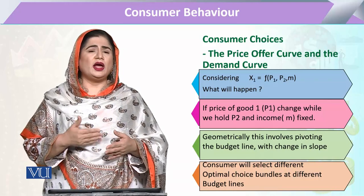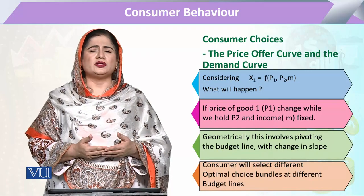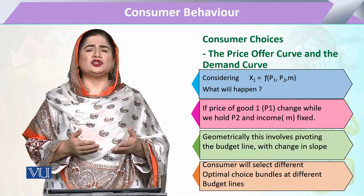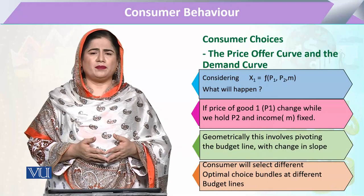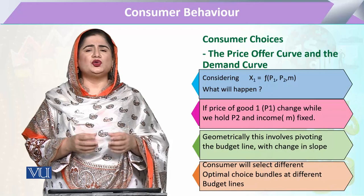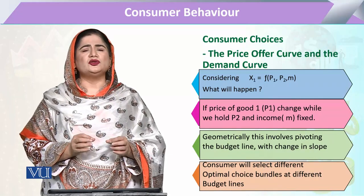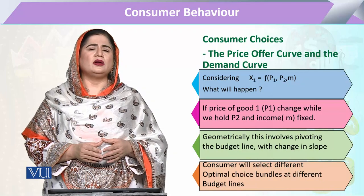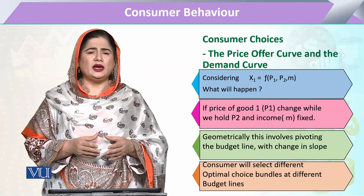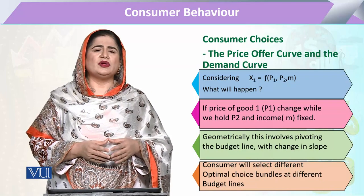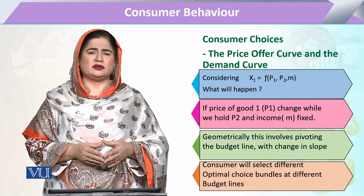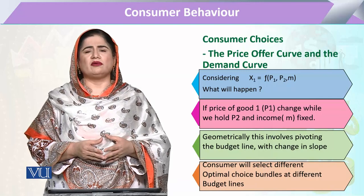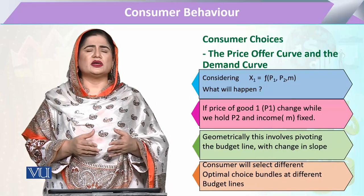Whenever there is a change in the price of a commodity, there will be a change in the shape of the consumer demand. When we join all the optimal choice bundles or the points available on the consumer's indifference curve with the change in price, we come up with the curve that is called the price consumption curve.